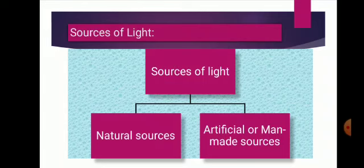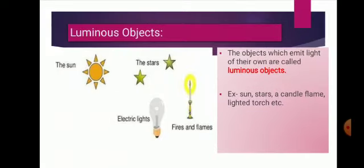Now, next is about luminous and non-luminous objects. A luminous object is one which gives out its own light. The sun, stars, burning candle, lighted electric bulb, lighted torch, glowing tube light, television screen when switched on, a piece of red-hot iron, flame of a gas burner, and firefly — all are luminous objects. This is because they give out their own light. Luminous objects are in fact the sources of light — they emit light of their own.